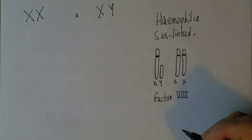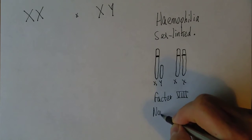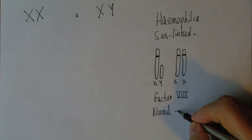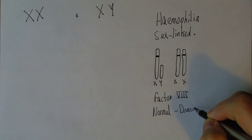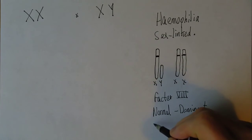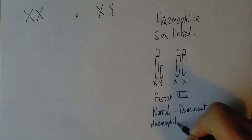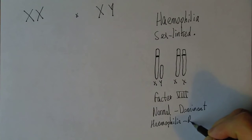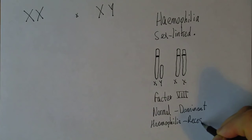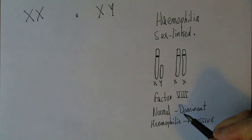The gene for normal clotting is dominant and the haemophilia gene is recessive. This means all you need is one copy of the normal dominant gene in order not to have any coagulation disorder.